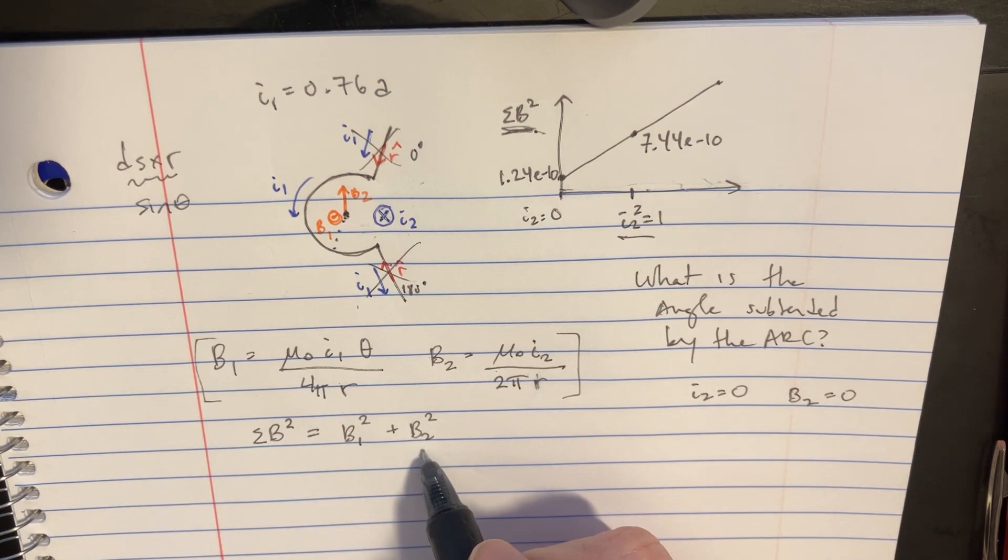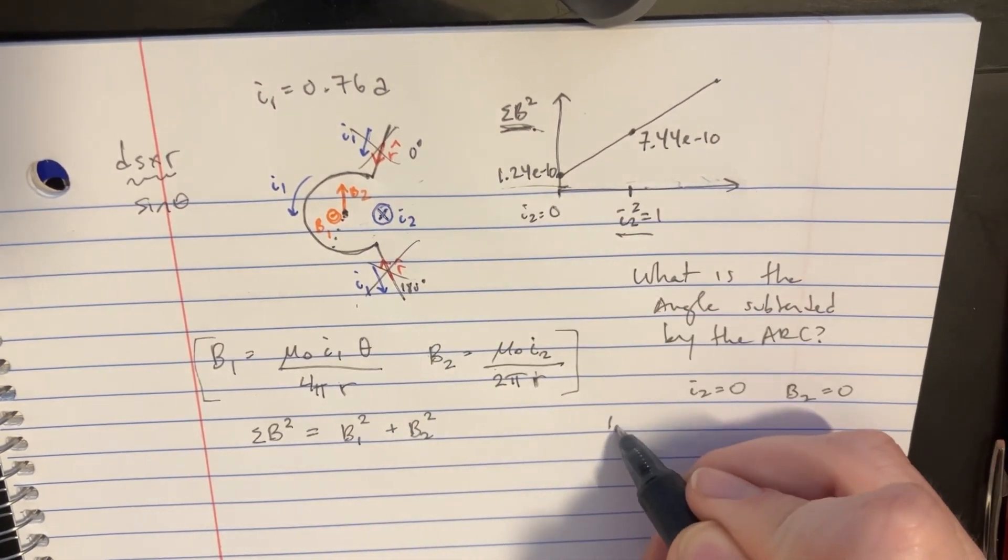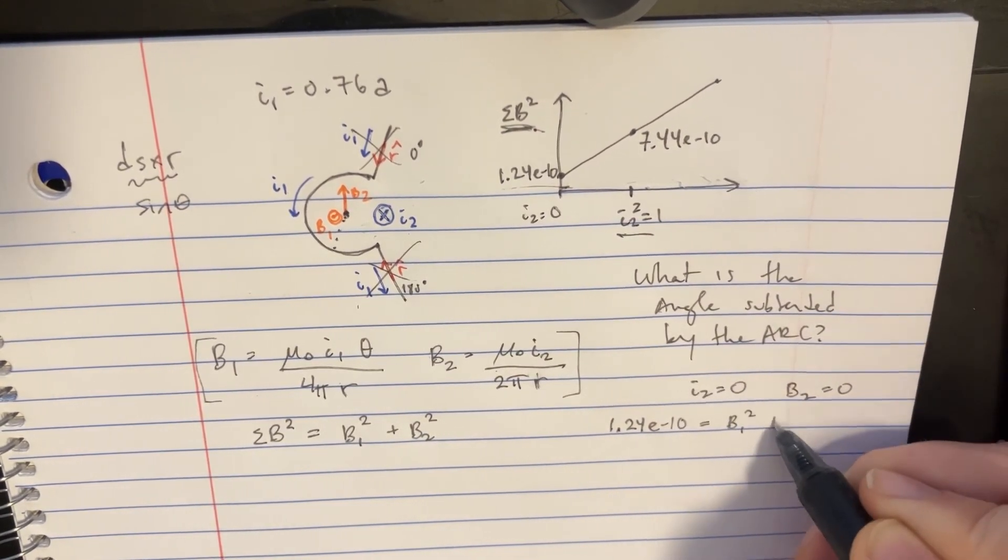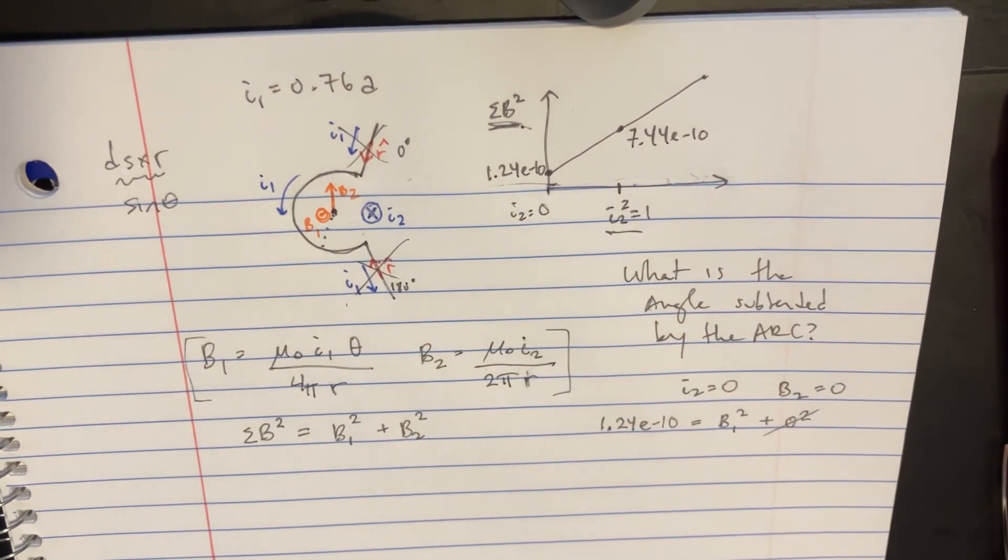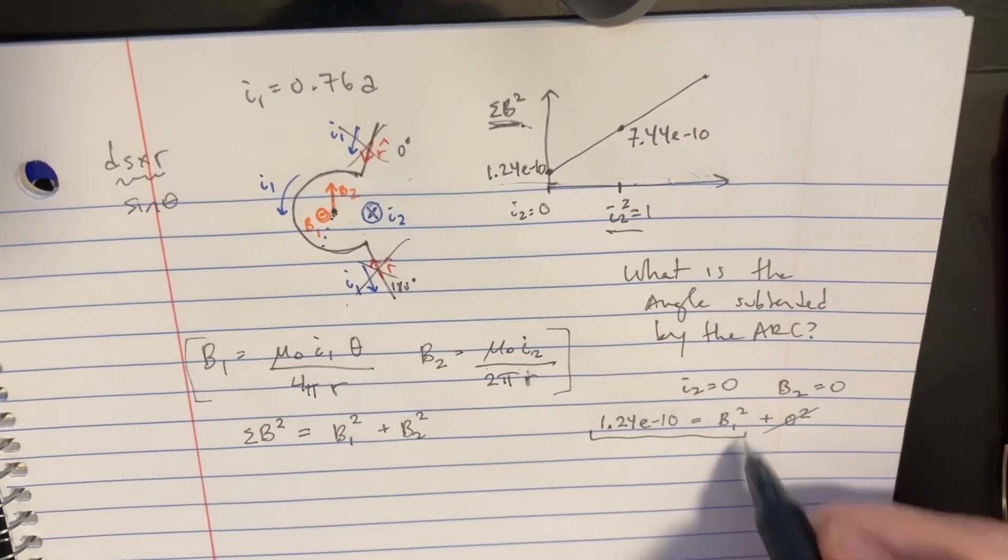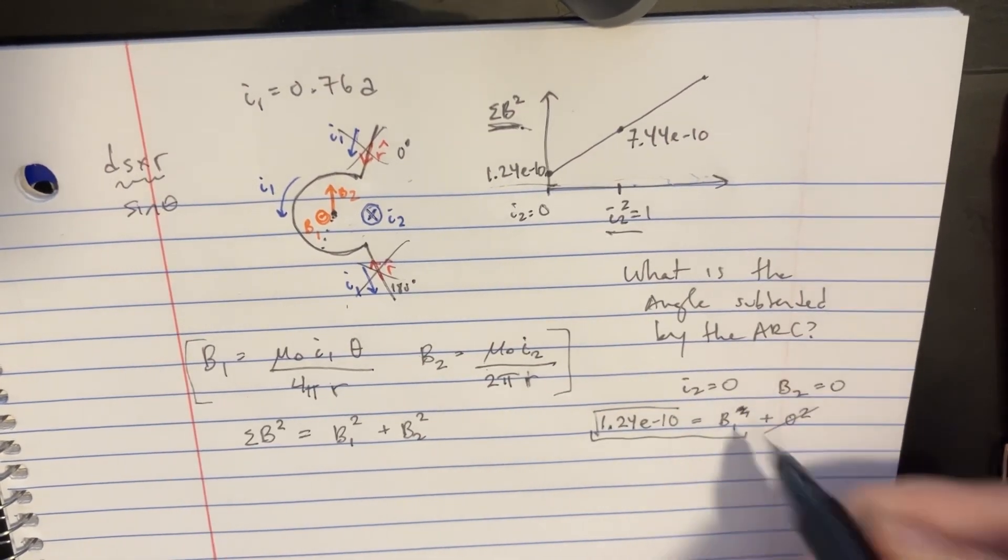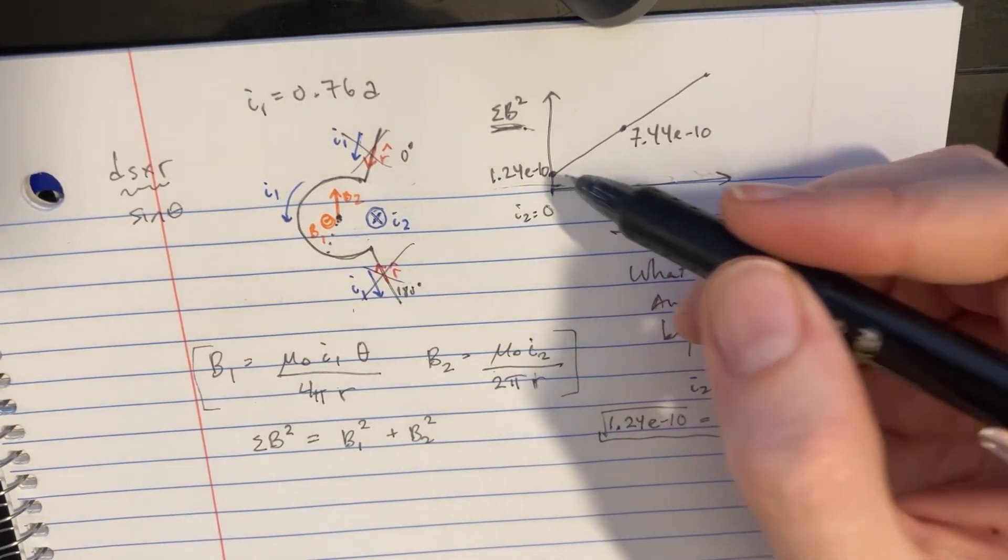And so we could figure out that the net B is going to be equal to 1.24, 1.24, e to negative 10, if B1 squared plus 0 squared is true. We can get rid of that. And we see that B1 is actually just this. So we can kind of square root of that. And we'll figure out what B1 is. So that's nice. This is going to help for later.